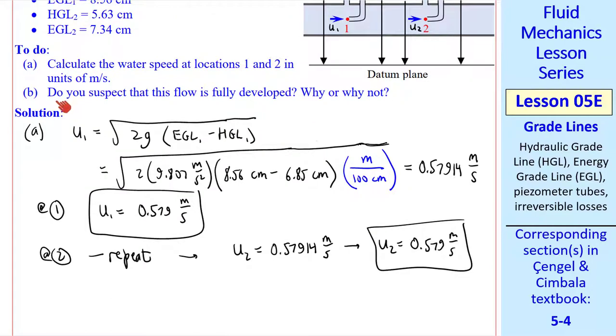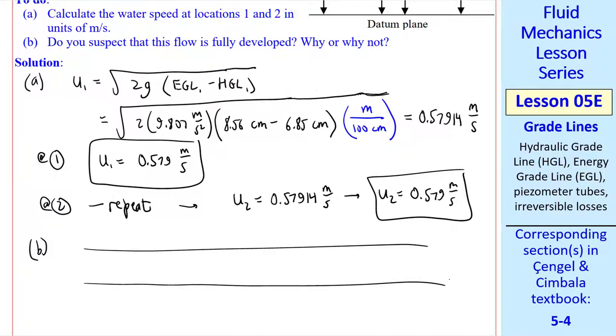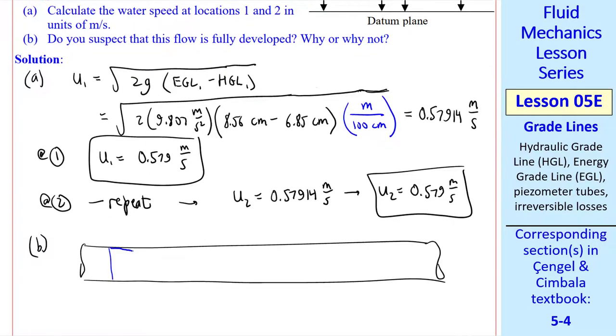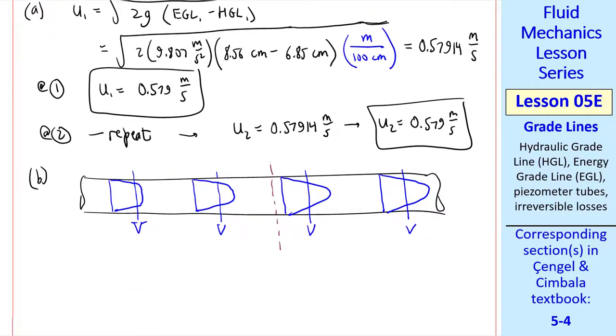Which brings us to part B of the question, do you suspect that this flow is fully developed? Why or why not? Well, we'll talk about developing pipe flow in more detail later. But briefly, in a developing flow, the velocity profile is changing downstream. But by conservation of mass, the average velocity, V, must remain the same. And eventually, this profile no longer changes. So at some downstream location, we say that the flow is fully developed. Whereas upstream of that point, it's still developing.